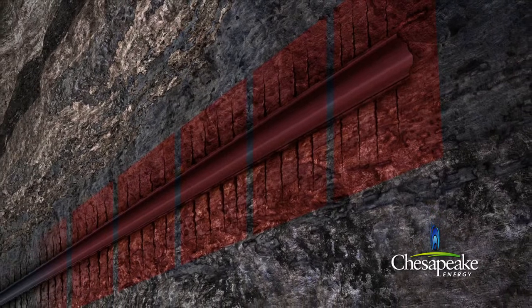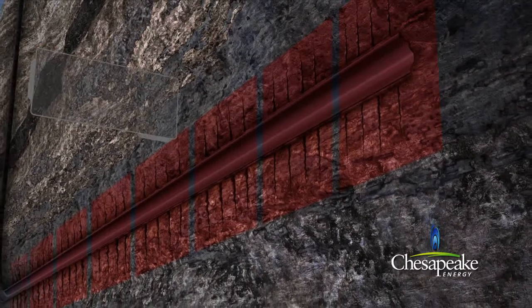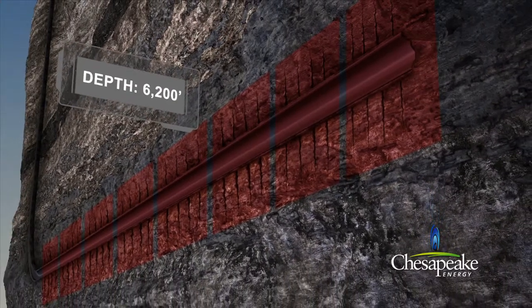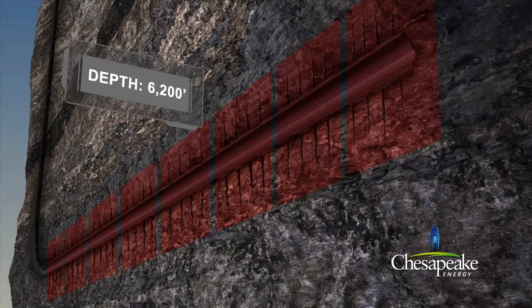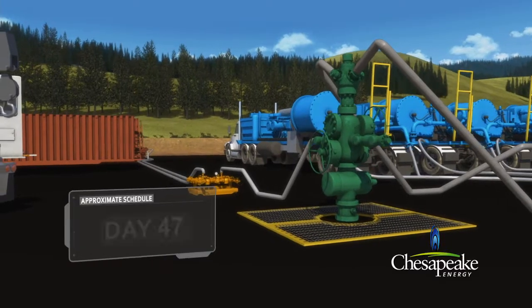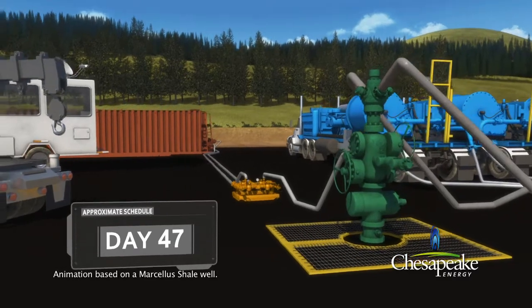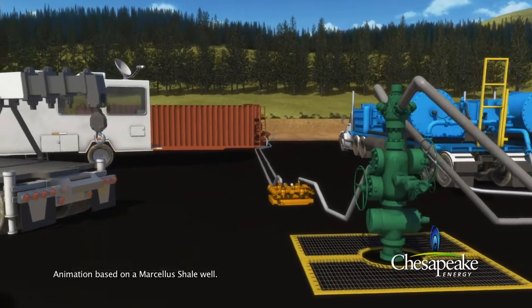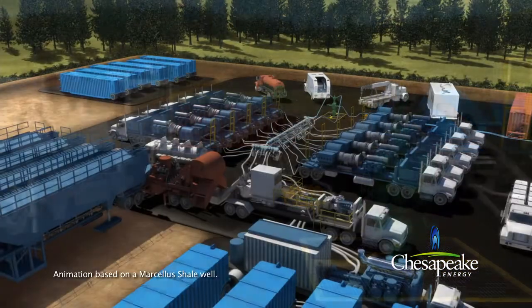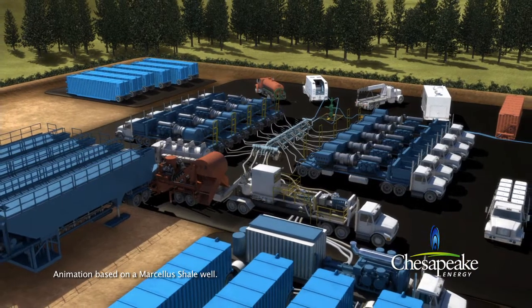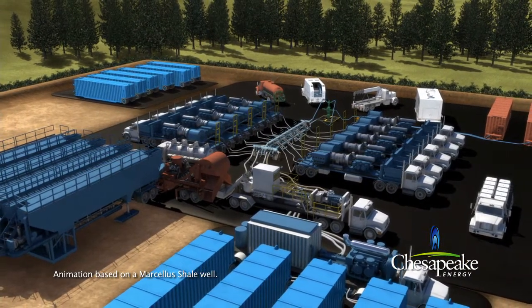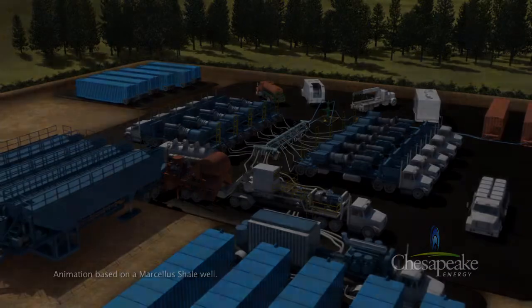At the conclusion of the fracturing operations, the isolation plugs are removed from the well and production can start. The produced fluids are diverted through a flow-back manifold into storage tanks. The fluids are then recycled or disposed of according to state and federal regulations.